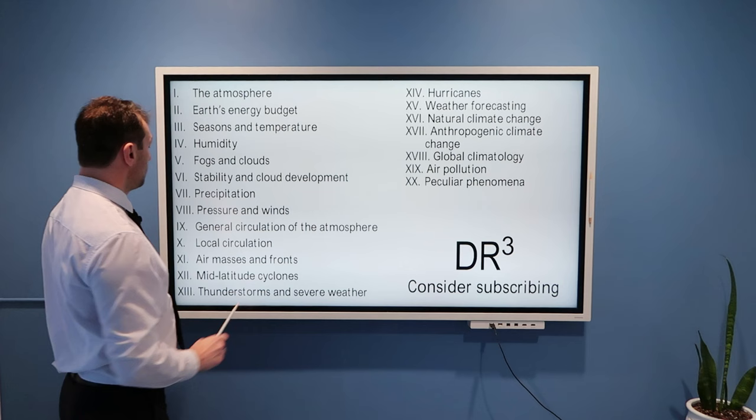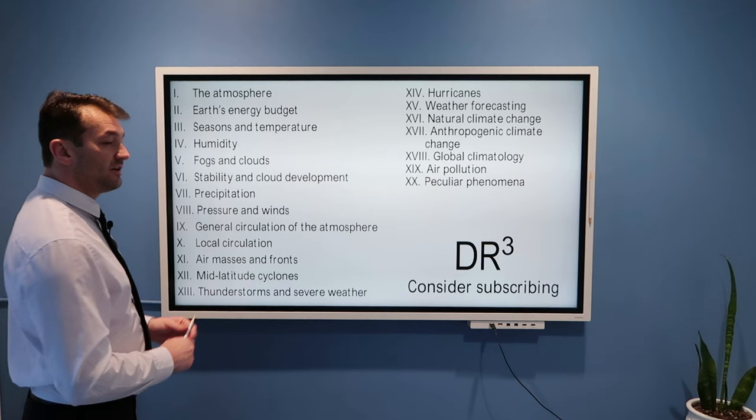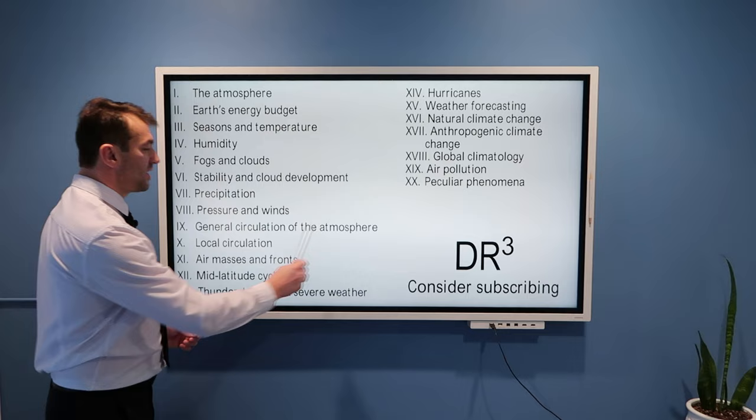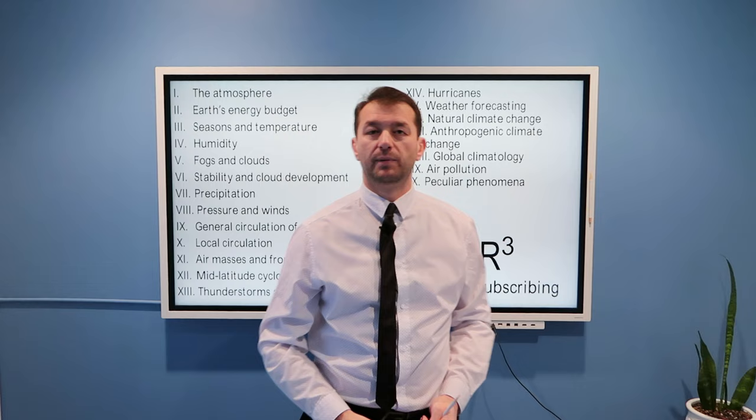Then we will talk about precipitation, how it forms, different types of precipitation, cloud microphysics. Then pressure and winds, then general circulation of the atmosphere, winds at large scale, at the scale of the beautiful planet Earth.